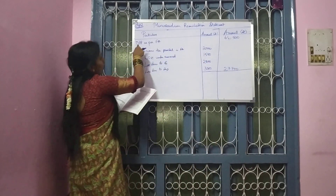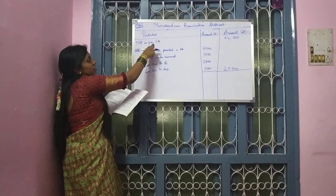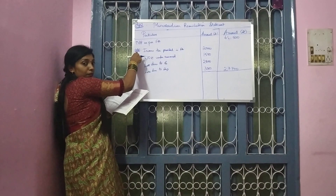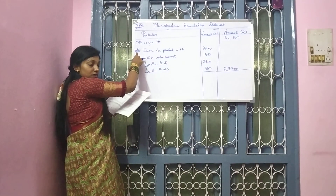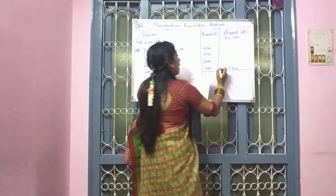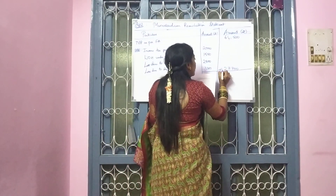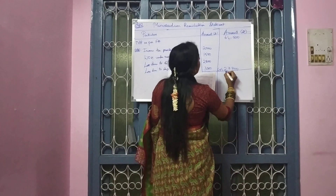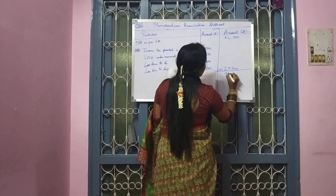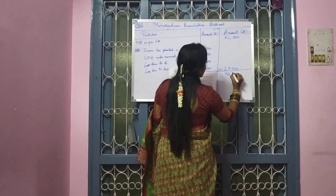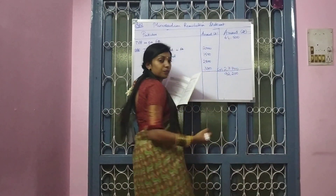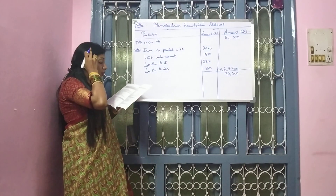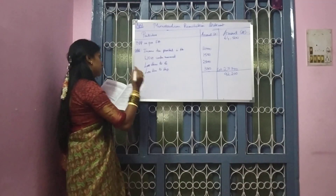Net profit as per FA — and if I write it as add, I am going to add it and it is going to be 92,200 rupees.